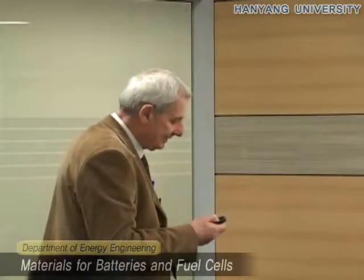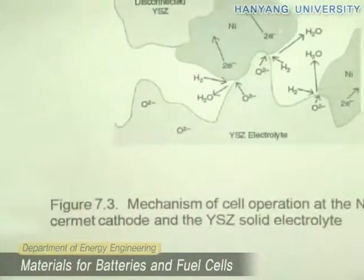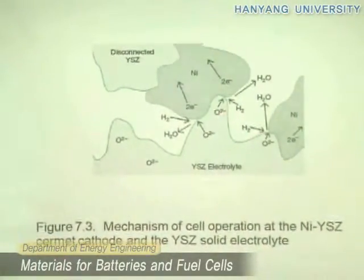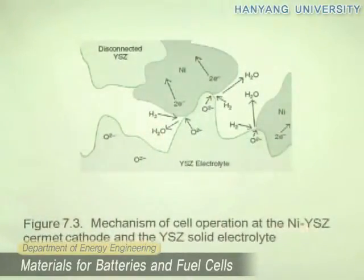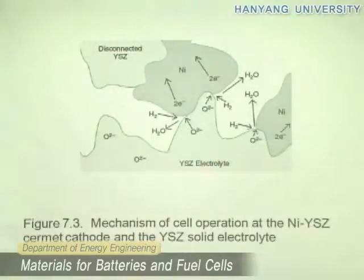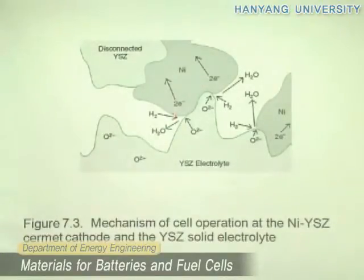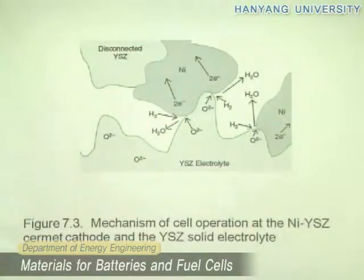The electrolyte — yttria-stabilized zirconia — is an oxide with oxygen vacancies, and oxygen ions jump from one vacancy to the other to conduct current. The anode is nickel mixed with this electrolyte, which is a good conductor. Oxygen arrives at specific points and reacts there. Remember that in a fuel cell you must have a three-phase contact: electrolyte, electrons, and gas species.